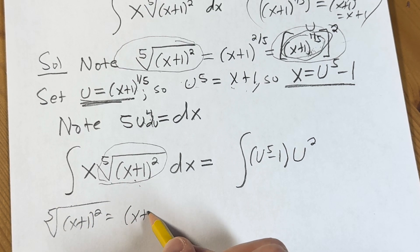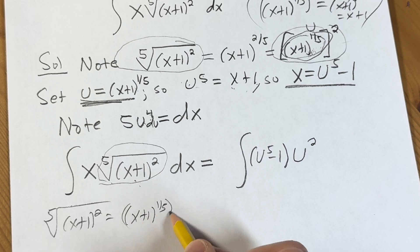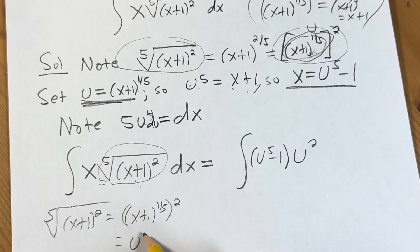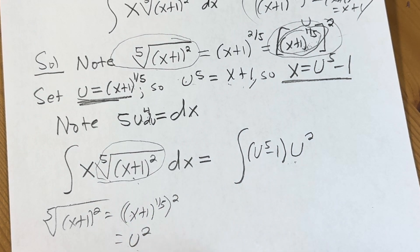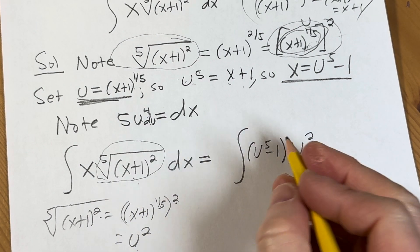We worked it out. We said that this is x plus 1 to the 1 5th squared. But that's u. But that's our u. So that's how we got that u squared. Because 2 times 1 5th is 2 5ths. It's the same thing as that. So we're good.